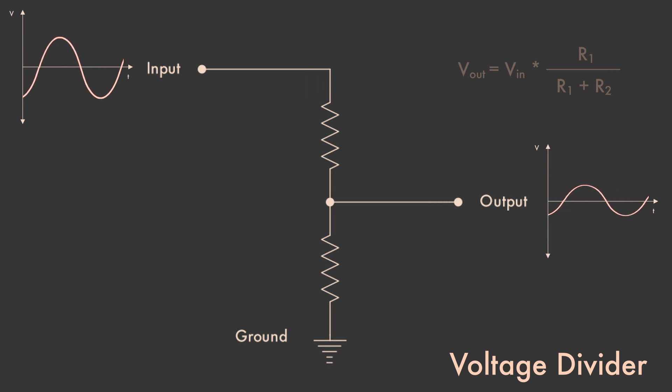The voltage between the two resistors is our output. Its level is determined by the input voltage and resistance values of the two resistors. The smaller the upper resistor is in relation to the sum of both resistors, the closer the output voltage is going to be to the input voltage.